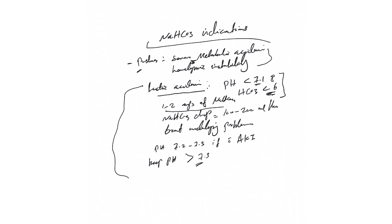Severe lactic acidosis: if there is no acute kidney injury, pH less than 7.1 and bicarb less than 6. And if there is acute kidney injury, you want to keep the pH more than 7.3. Next video, we'll talk about other indications of bicarb drip.